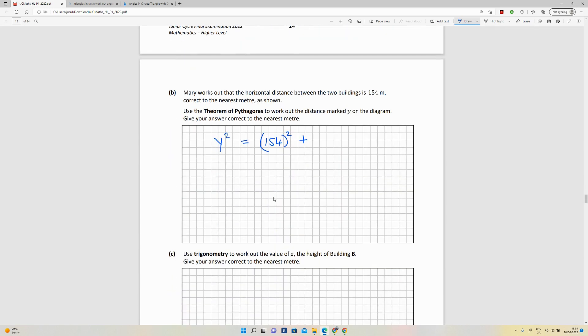So I can put in 220 there squared. So that's a big number. When I put that into my calculator I'm going to get 72,116. So y is going to be, using my calculator, the root of 72,116. So what is that value? It's 268.54.